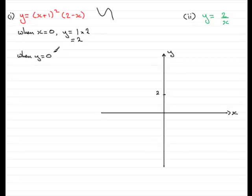Now when y equals 0 we put this equal to 0. So therefore we would have 0 equals x plus 1 all squared multiplied by 2 minus x.